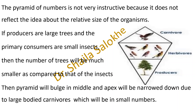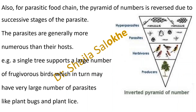Thus, the pyramid will look like a diamond shape. Also, for a parasitic food chain, the pyramid of numbers is reversed due to successive stages of the parasite, giving an inverted pyramid of numbers. The parasites are generally more numerous than their host. For example, a single tree supports a large number of fugitive birds, which in turn may have a very large number of parasites like plant bugs and plant lice. In the diagram, you can see the inverted pyramid of numbers, where producers are smaller in number as compared to the consumers.